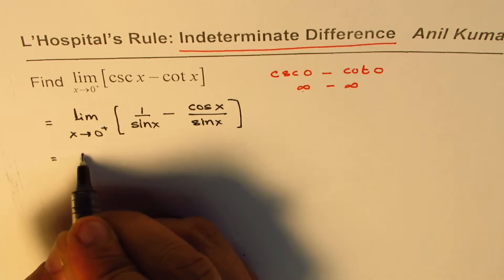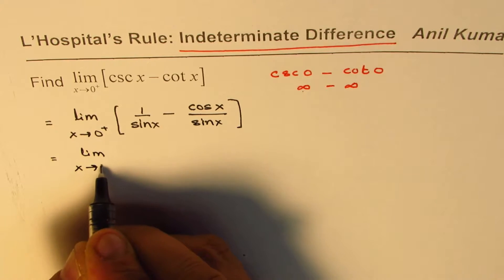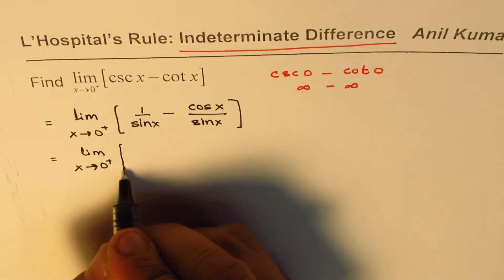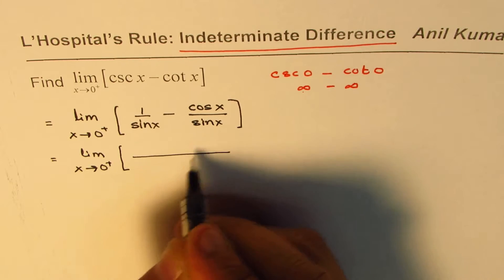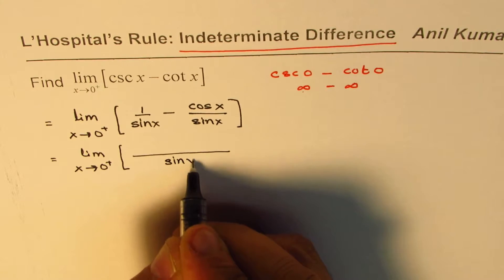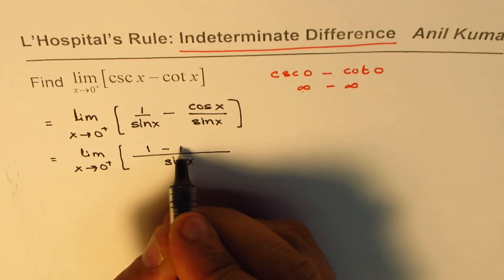You could write this as limit x approaches 0 from the right side. We can take common denominator as sine x. And we get 1 minus cos x.